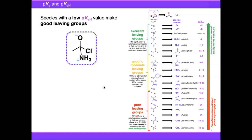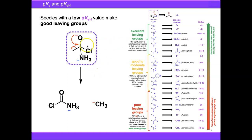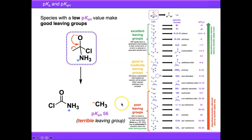Where we encounter this most commonly is in tetrahedral intermediates. An oxygen lone pair wants to come down and kick out one of three groups — but which one? If we consider kicking out methyl⁻ first, we end up with CH₃⁻ as our leaving group. We know the pKaH of CH₃⁻ is 56 — that means it's an incredibly poor leaving group, and it's unlikely that this process will happen.